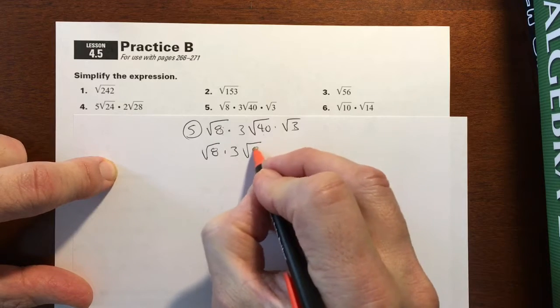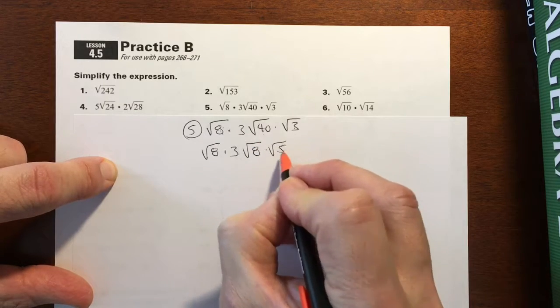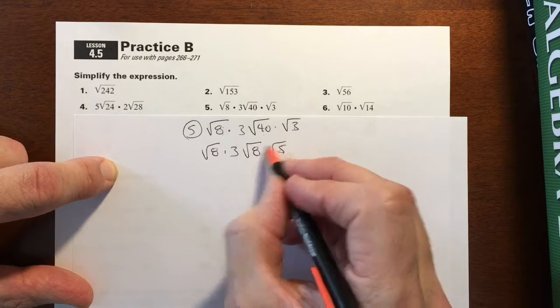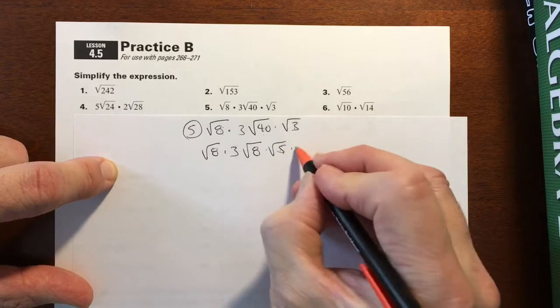So I'm going to rewrite this, a small change, square root of 8 times the 3, and I'm going to turn that into square root of 8, square root of 5, because 8 times 5 is 40. 40 was in the radical, 8 and 5 under the radical, times square root of 3.